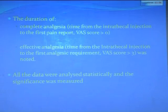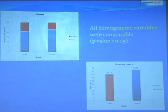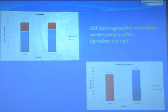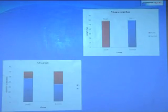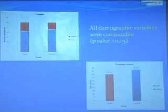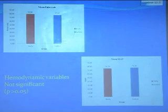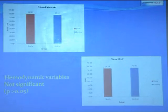All data were analyzed statistically. Demographic variables including gender, mean age, mean weight, and ASA grades were comparable between the two groups with no significant difference. Hemodynamic variables — mean pulse rate and mean arterial pressure — also showed no significant difference between the study and control groups, with p-values greater than 0.05.